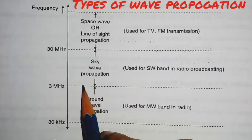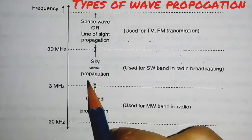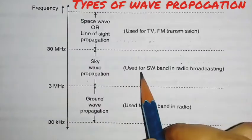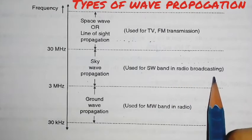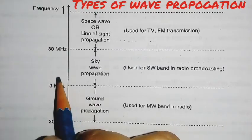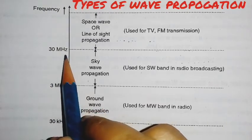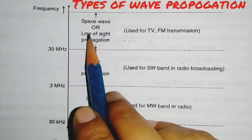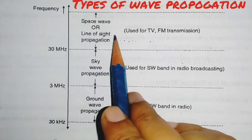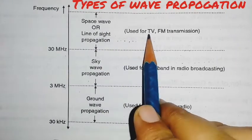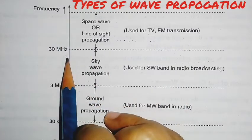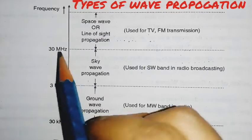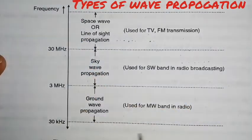The second type is sky wave propagation, which is used for the short wave band in radio broadcasting. Its frequency range is 3 megahertz to 30 megahertz. The third type is space wave, or line-of-sight propagation, which is used for TV and FM transmission. Its frequency range is 30 megahertz and above.